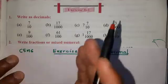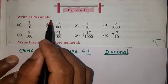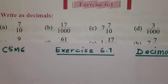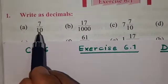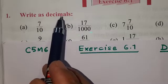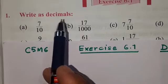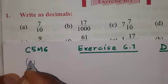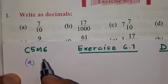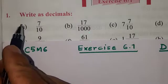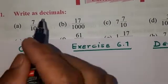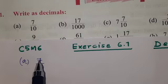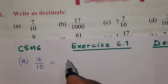We are going to write numbers as decimals. Decimal means the number with a point. We will learn the decimal group — a number with a point. For example, seven by ten. So don't forget: a decimal is a number with a point.